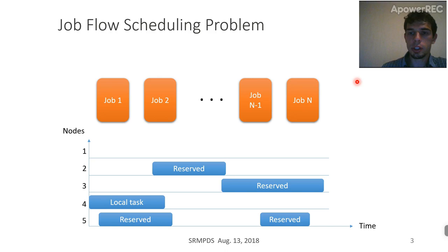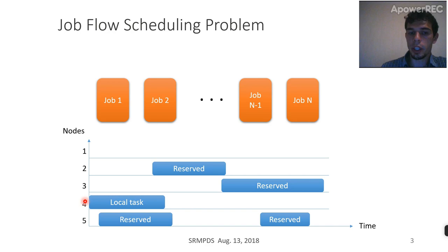First of all, we have a list or queue of parallel jobs submitted by system users. We have a set of resources or computing nodes on a timeline, so their local schedules are exposed. At any given time, some nodes may have already running tasks on them, and another node may be reserved somewhere in the future. The job flow scheduling problem is to take all these jobs, allocate the required resources for them, and execute them on available resources.